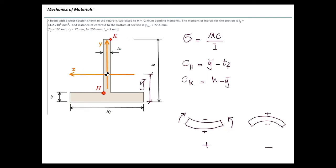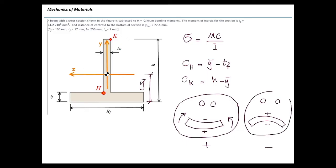One way to remember this: if you like bonus points and positive points, that's the positive moment — the smiley face shape. The penalty or deducted points corresponds to the negative moment shape. In the current problem, the moment is negative, and so it produces tension on top and compression on the bottom. Therefore, sigma_k would be positive and sigma_h would be negative.